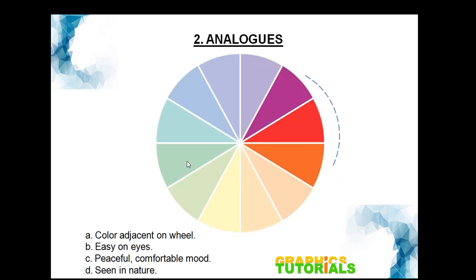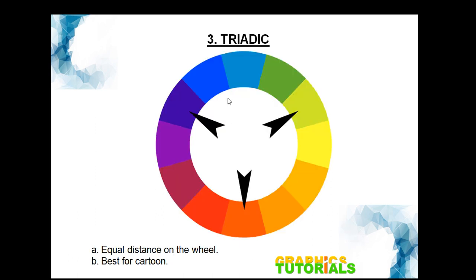The next color harmony is analogous. Analogous colors are the colors adjacent on the wheel. Say for example, if you select this color, the next two immediate colors on either side form the analogous combination. It's up to you how you select the series of adjacent colors on the wheel. This is a very soothing combination of colors and can be used for a peaceful, comfortable mood — often seen in nature.